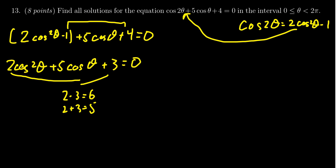And so we can factor this by reverse FOIL. I bet I could probably guess the factorization because 2 and 3 are prime numbers, so there's not a lot that could go on there. To get a 2 cosine squared, you're going to have to have a 2 cosine theta and a cosine theta. That's the only option there.